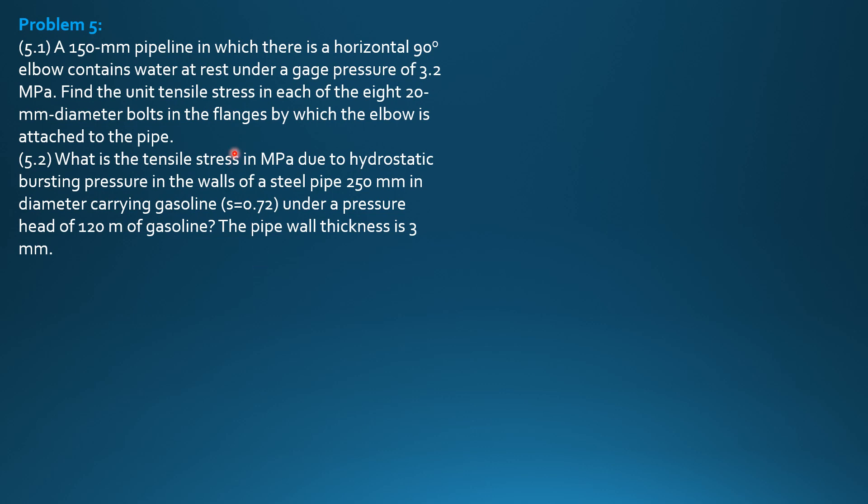So, for the first part, we equate the force pressure times area of the 150 mm diameter pipeline to 8 times the stress in the bolt times area of the bolt. So that's the idea. F is pressure times area equals 8 times stress in one bolt times area of bolt.